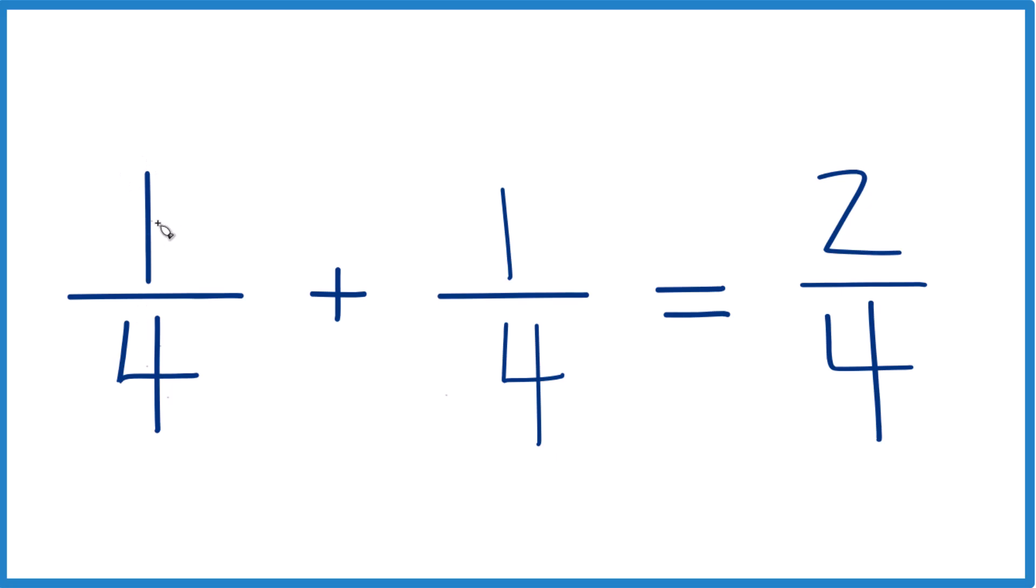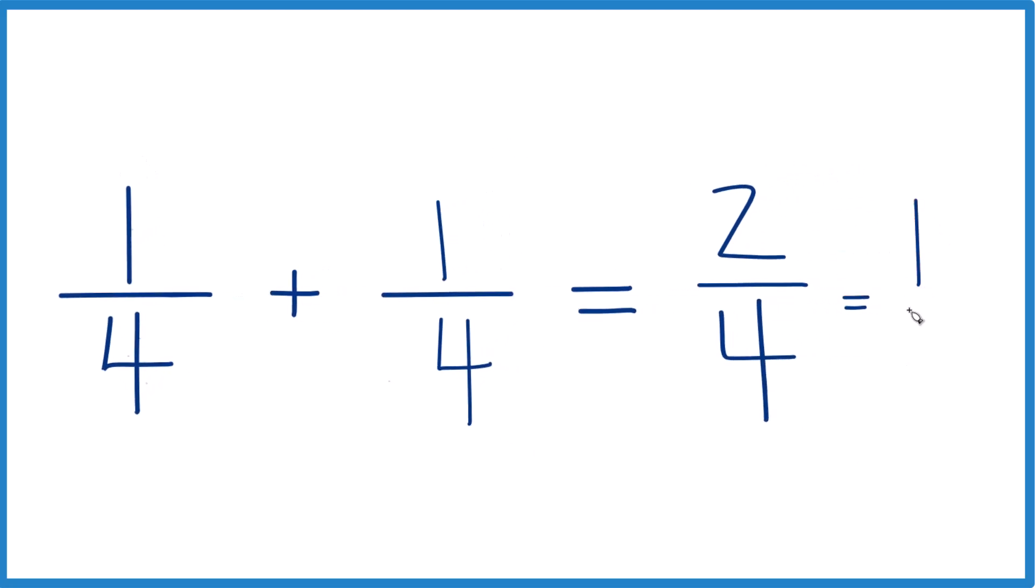So now I figured out that one-fourth plus one-fourth equals two-fourths, and we know that equals one-half. So one-fourth plus one-fourth equals one-half. That's the way I would figure this out.